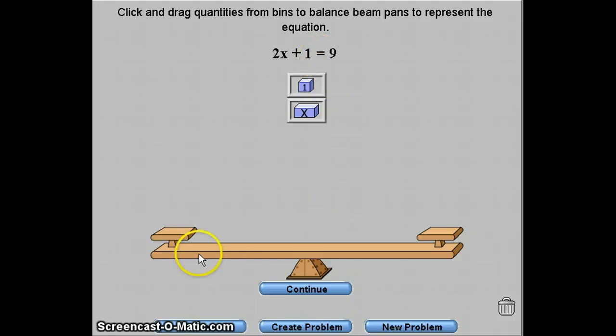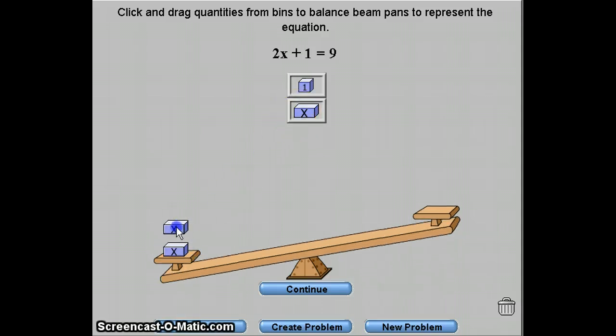The equal sign represents the scale is even. The left side of the equal sign is the amount you're going to put on the left arm. So in this case I have 2x, so I'm going to put two boxes labeled with x, and in addition I'm going to put one box labeled with 1.